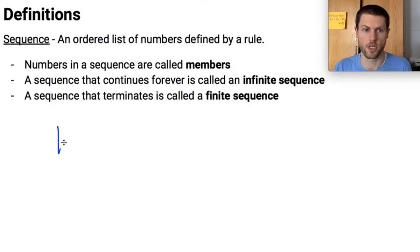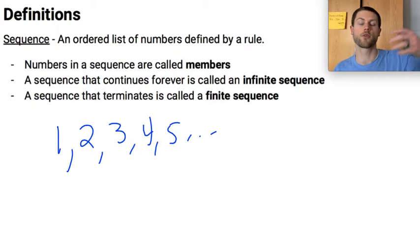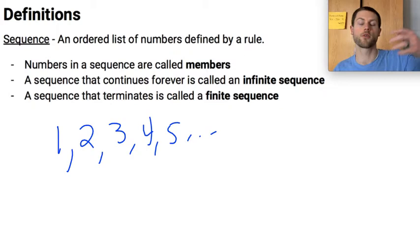Probably the easiest or more simple sequence that you've seen before is just the counting numbers: 1, 2, 3, 4, 5, and so on and so forth. If I were to continue counting this forever, this would be an infinite sequence. The members of the sequence would be 1, 2, 3, 4, those are the members of the sequence, and the order in which they appear.